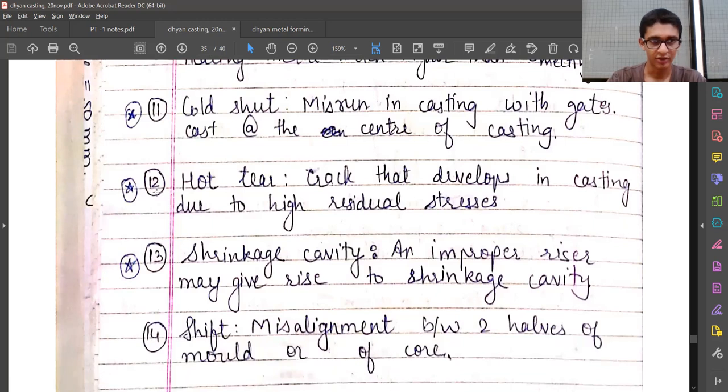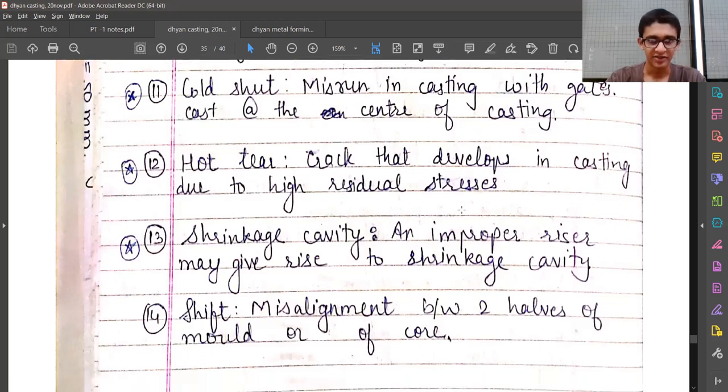Twelfth, which is also important, is hot tear—cracks that develop in casting due to high residual stresses, and residual stresses are usually thermal stresses in this case.